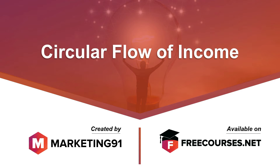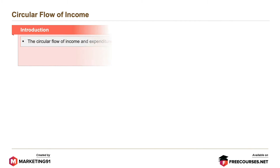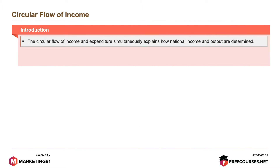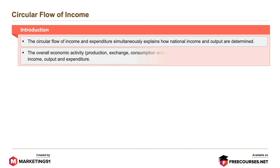Hello and welcome to marketing91.com. The circular flow of income and expenditure simultaneously explains how national income and output are determined. The overall economic activity — production, exchange, consumption, and distribution — is represented by a circular flow of income.